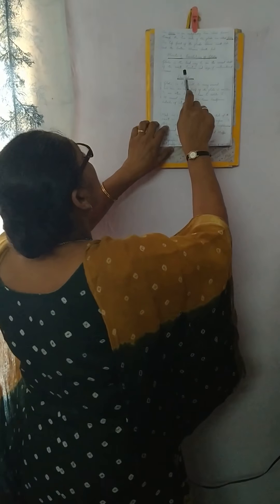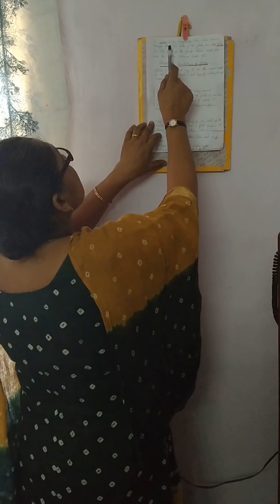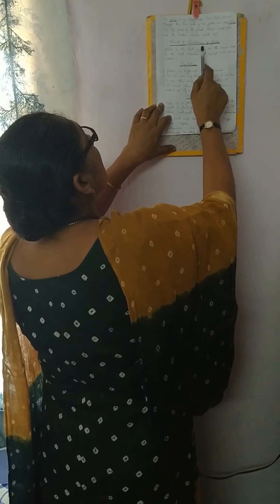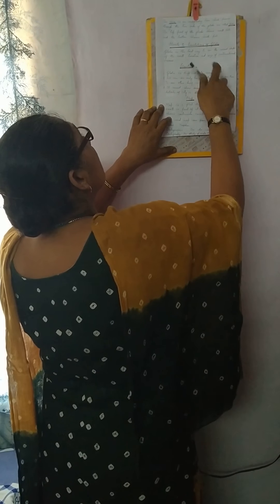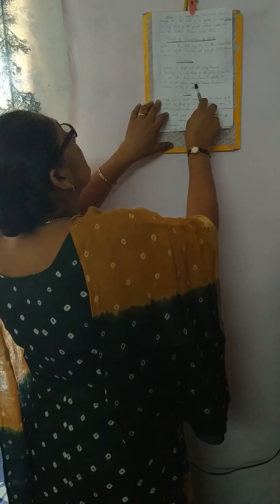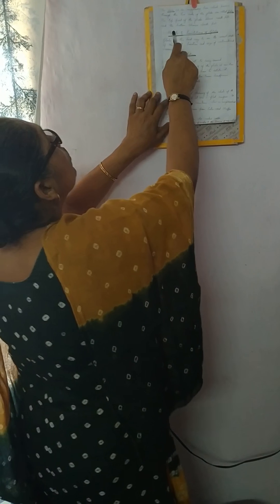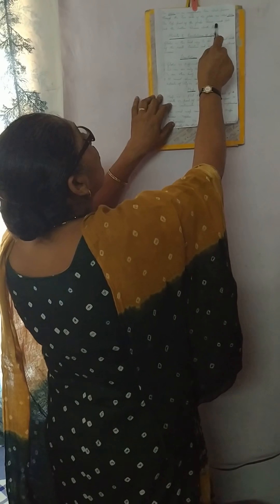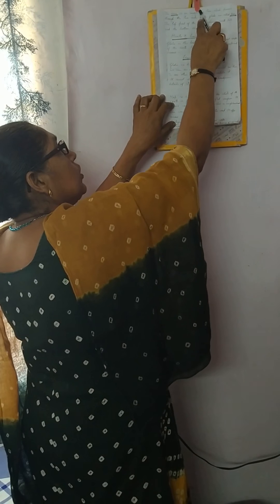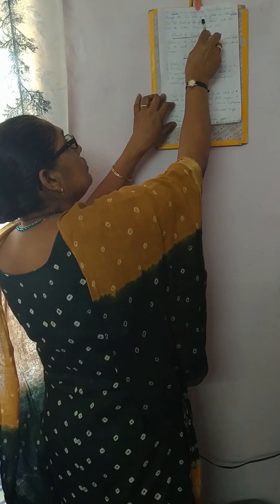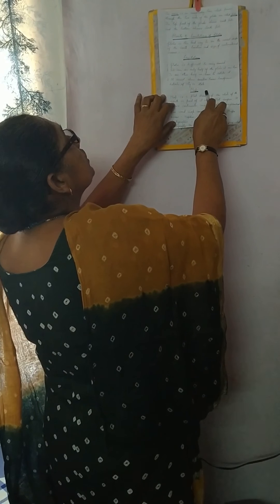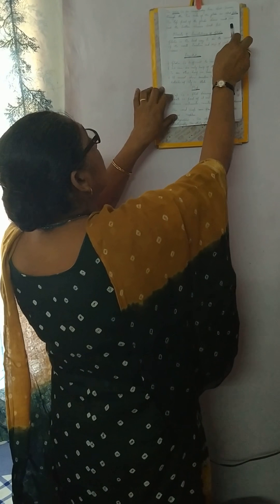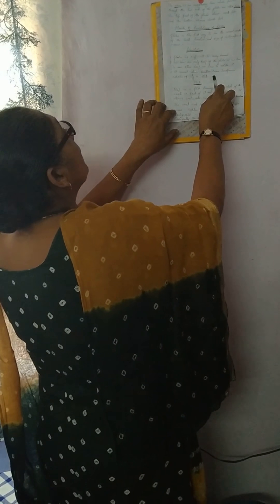The axis is an imaginary line which passes through the two poles of the globe — from north to south. The top part of the globe shows the north, and the bottom part shows the south.